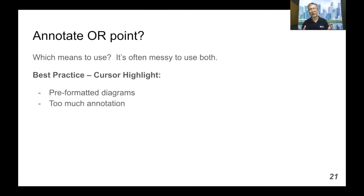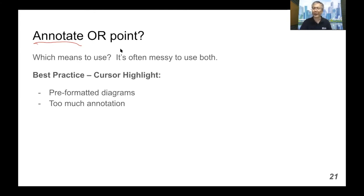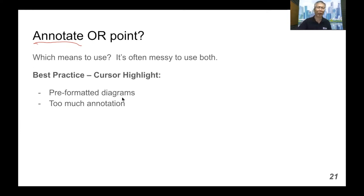A natural question is whether you should be using the annotation function or pointing with the software cursor on the Mac. It's often messy to try to use both and not usually a good idea because it confuses the messages for your learners. Our recommendation is to use the cursor highlight when you have pre-formatted diagrams where you want to show a part-whole relationship.